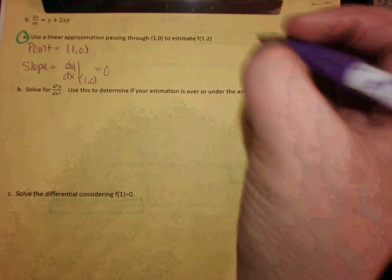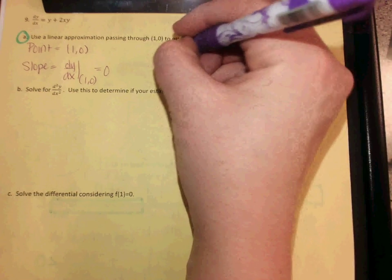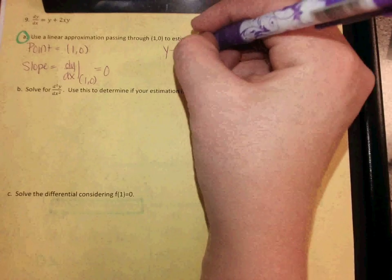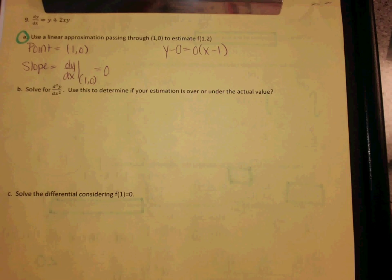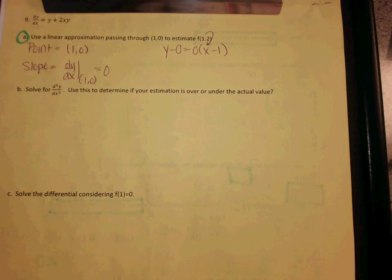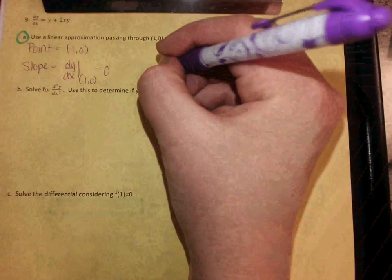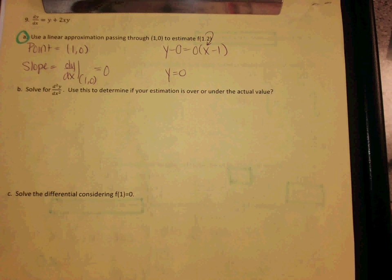So then what would your equation of your tangent line be? Y minus 0 equals 0 times (x minus 1). Then what do you do with your funny decimal? You would plug it in, but think about it. If I end up multiplying it by 0, what's going to happen? 0. It's just y equals 0. Okay, and remember, 0 is the number 2.